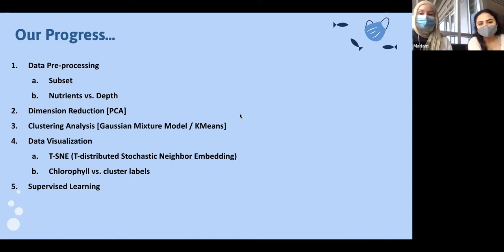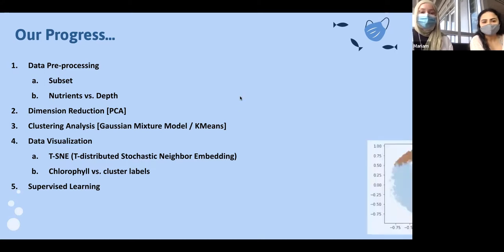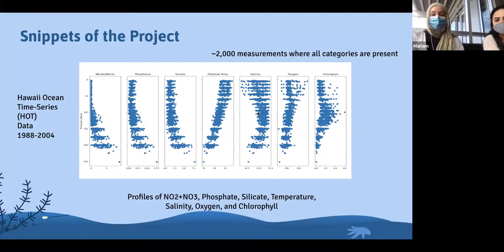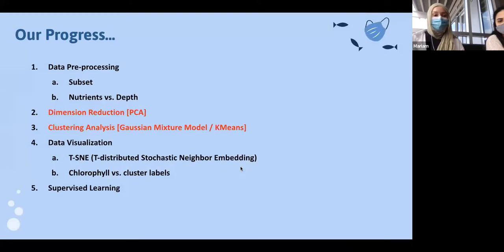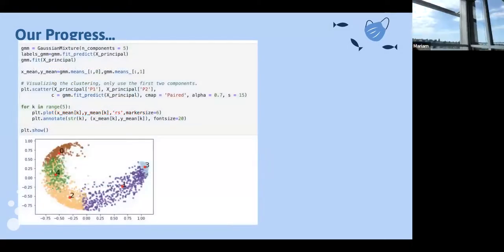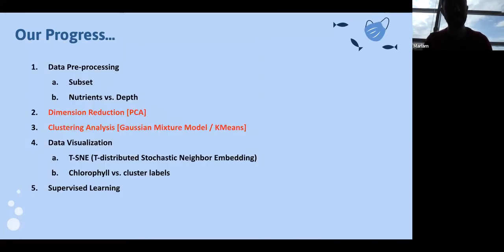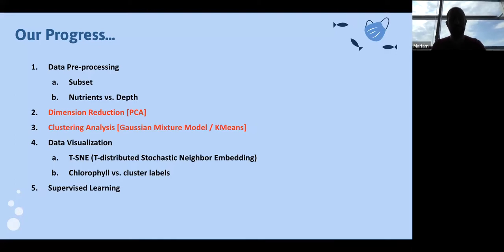This is an overview of the steps we took and the different types of analysis we did. The first set of graphs we made were the vertical nutrient profiles — nitrate, phosphorus, silicate, temperature, salinity, oxygen, and chlorophyll. You can see how nitrate, phosphate, phosphorus, and silicate all have similar patterns, whereas temperature decreases with depth, and chlorophyll has this vertical bell shape.